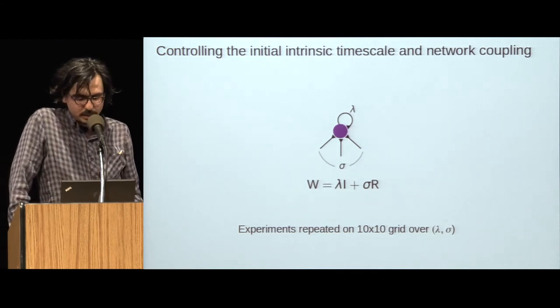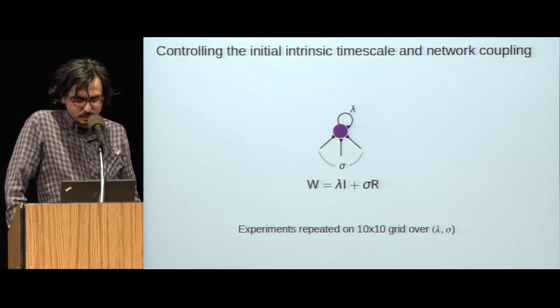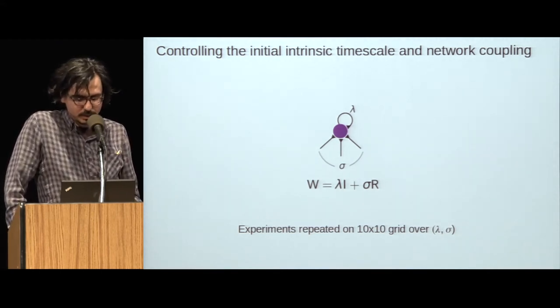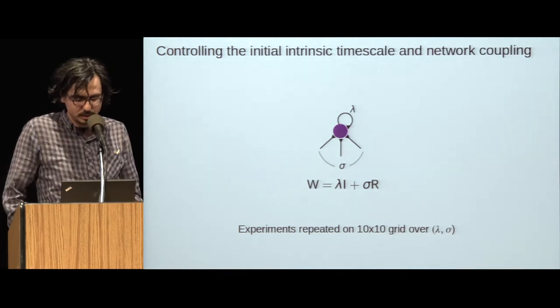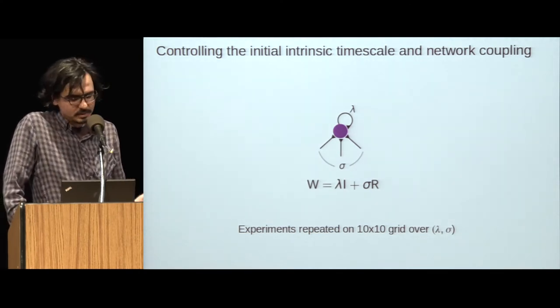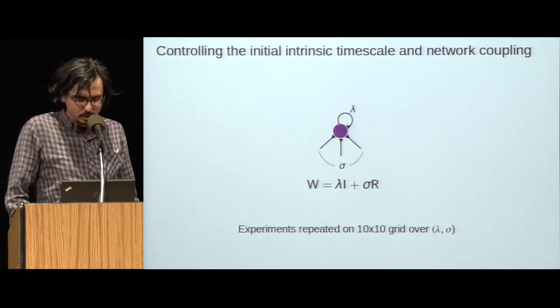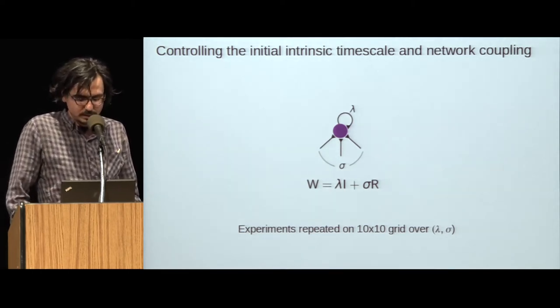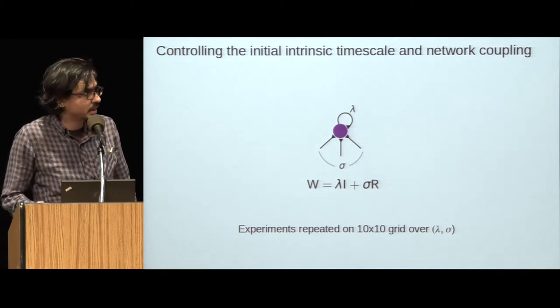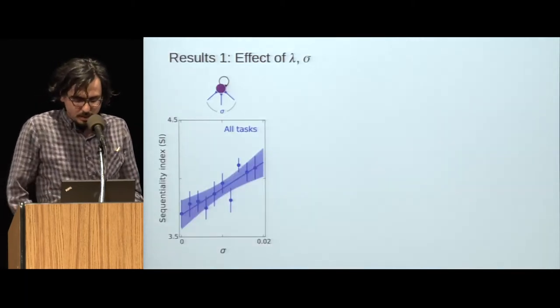To avoid any sensitive dependence of our results on initialization, we repeated all our experiments on a 10 by 10 grid over this two-dimensional hyperparameter space. And this gives rise to a diverse set of dynamics in the initial network ranging all the way from quickly decaying dynamics to unstable dynamics to anything in between.